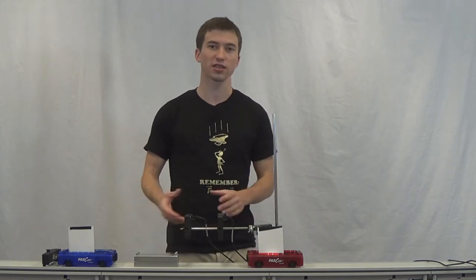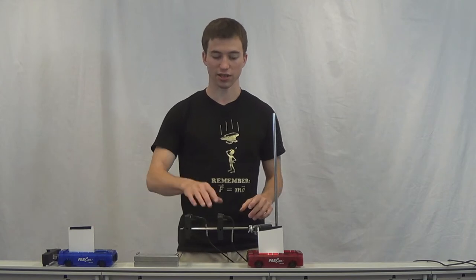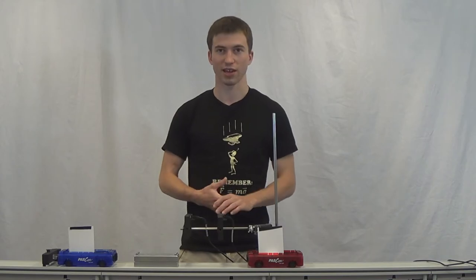We are going to use Velcro to model an inelastic collision and we are going to compare our initial velocity using these photogates with our post-collision velocity using the same setup.